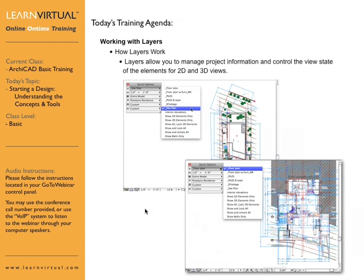Layers is the next important aspect to setting up and beginning a project. Layers in ARCHICAD is something we use to control information within the project in a simple way. Looking at the quick options, you can pop out layer combinations. By default, layer combinations control layers that we want on or off, unlocked or locked. For example, we have the site plan — we select that, and the site plan layers turn on specific to that information.